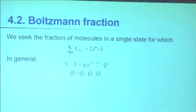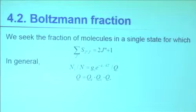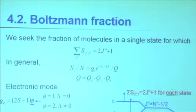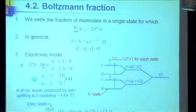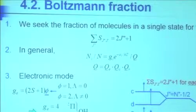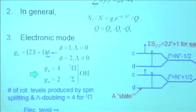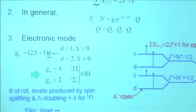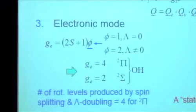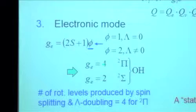Now we do the Boltzmann fraction. Here's the general expression — but now we've got electronic, vibration, and rotation. We have to be careful about where we're putting the spin splittings and the lambda doubling — are we putting them in the electronic mode or the rotational mode? You can only put it in one place. If we put it in the electronic, that's when you get the multiplier for lambda doubling and for 2S plus 1 — that's where you pick up the factor of 4. The electronic degeneracy in this case is 4 for the ground state and 2 for the upper state.